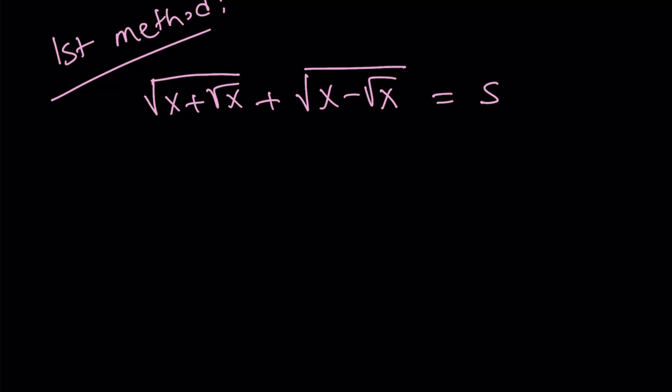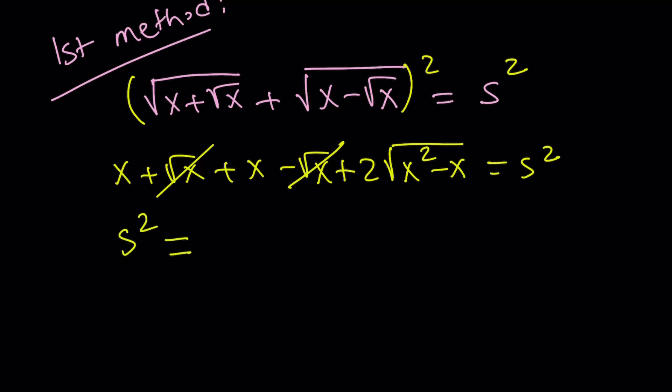And square both sides here, obviously. That should be like an obvious step. If you square both sides, you get x plus root x plus x minus root x. And then from the 2ab, you get 2 times the square root of x squared minus x, using difference of two squares. And that equals s squared. Square root of x cancels out. And we end up with some expression for s squared. Let's go ahead and evaluate that. It is going to be 2x plus 2 times the square root of x squared minus x.